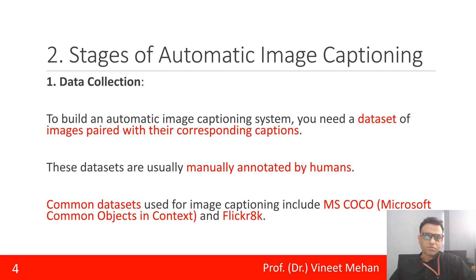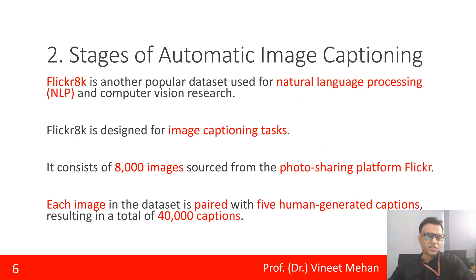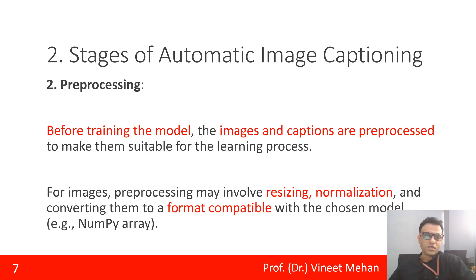The various stages for automatic image captioning begin with data collection. For data collection, we look for databases like MS COCO — that is Microsoft Common Objects in Context — and Flickr 8k. These databases contain images with their corresponding manually written captions, and both are suitable for the data collection part.